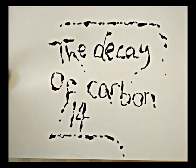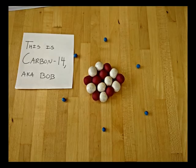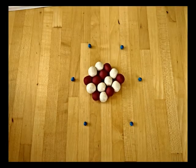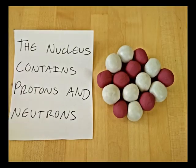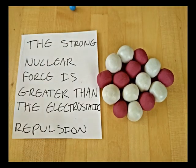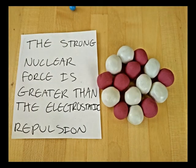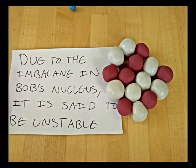The decay of carbon-14. This is carbon-14, a.k.a. Bob. The nucleus contains protons and neutrons. The strong nuclear force is greater than the electrostatic repulsion. Due to the imbalance in Bob's nucleus, it is said to be unstable.